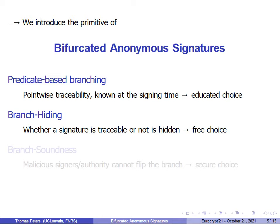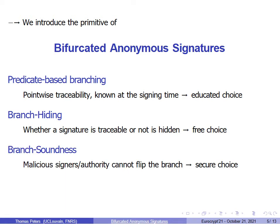We also stress that revealing the branch can give private information about the signer, so this is one more reason to hide the branch. Further, we also require bifurcated anonymous signatures to satisfy the branch soundness notion. This is a security requirement which ensures that malicious signers, even colluding with all the authorities, cannot flip the branch and force the computation of a signature that should fall in one branch while it finally falls in the other. Somehow, it says that no one can cheat with the predicate upon which an honest signer can make a secure choice.